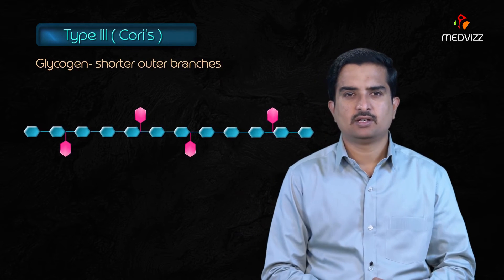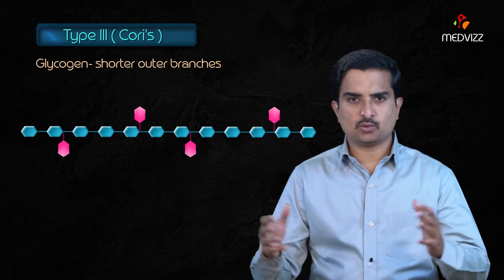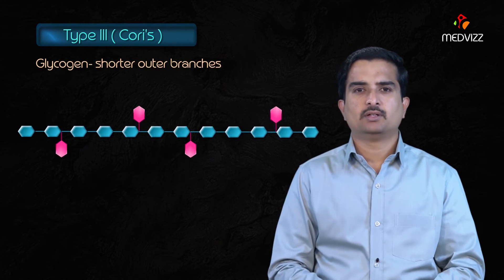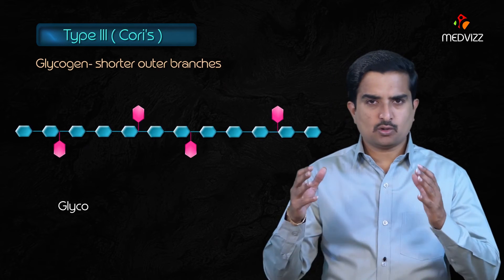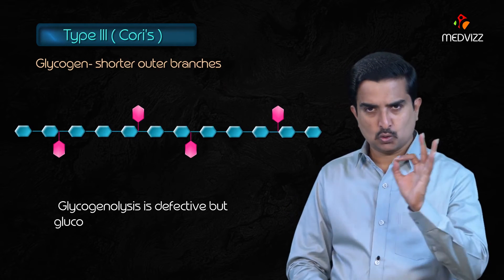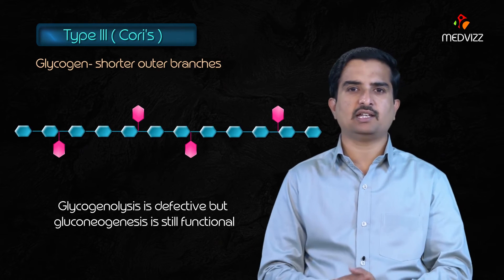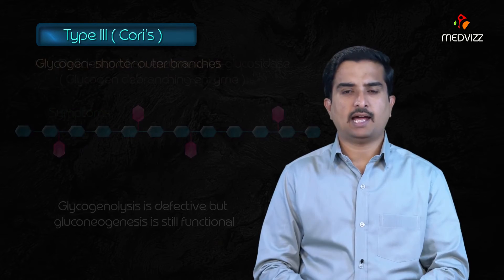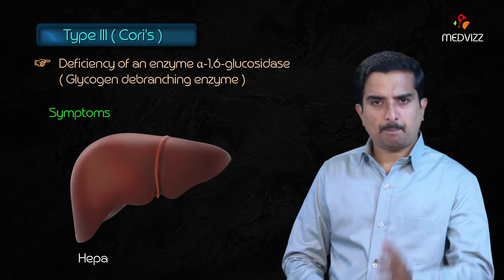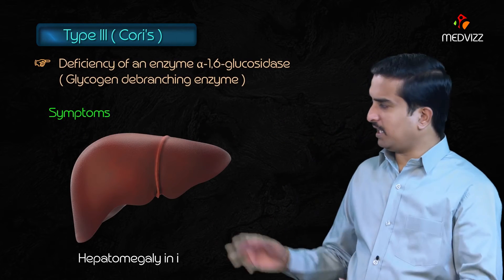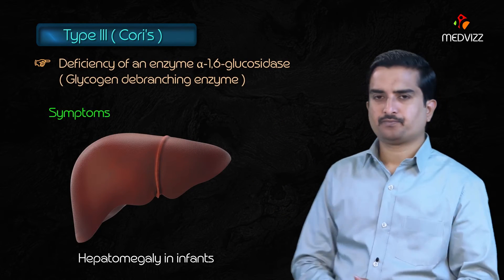In Cori's disease, glycogen molecules have shorter outer branches with single glucose residues. Glycogenolysis is defective but gluconeogenesis is still functional. It presents with hepatomegaly in infancy.